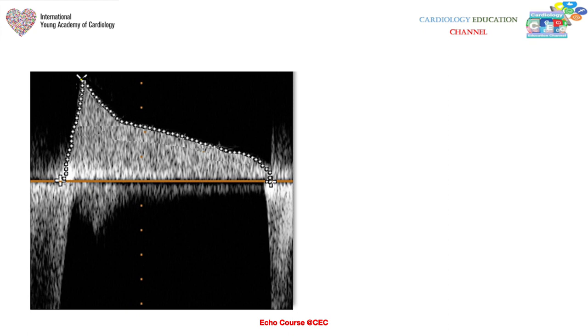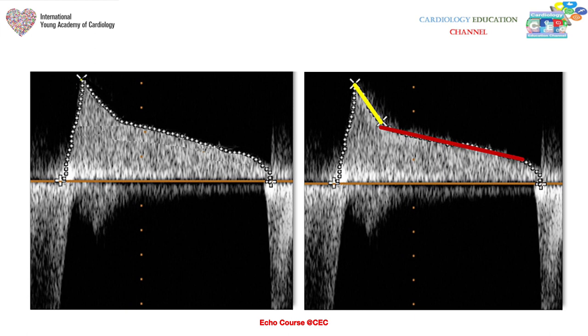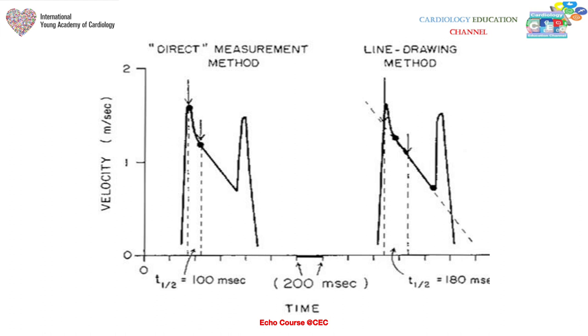Sometimes you encounter two slopes — an initial fast drop and then a slower mid-diastolic drop. In this case, you should take the more steep slope occurring in mid-diastole, as this is more correlated to mitral valve area.